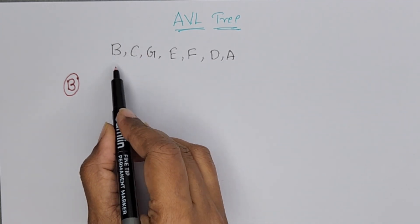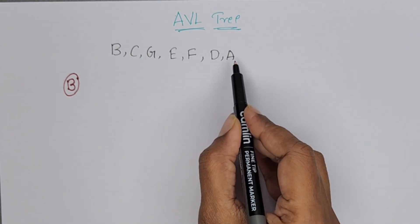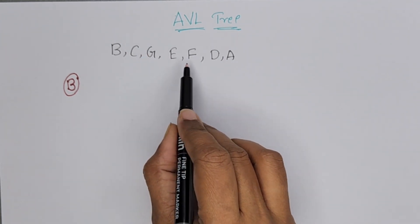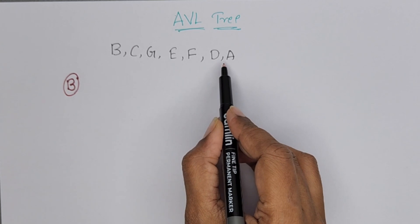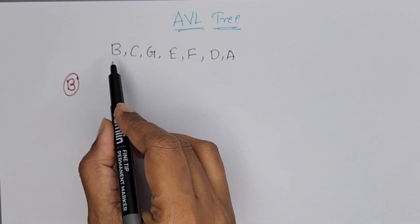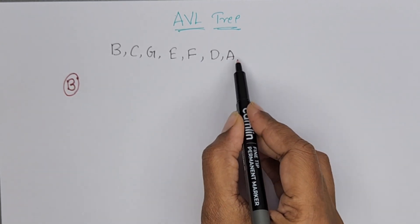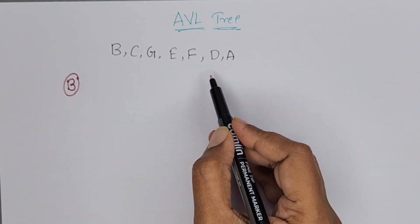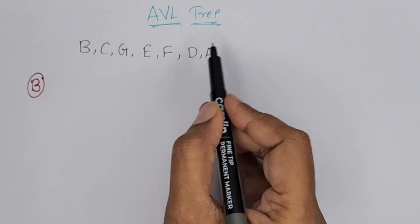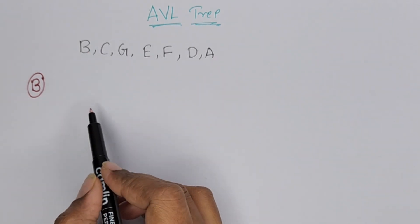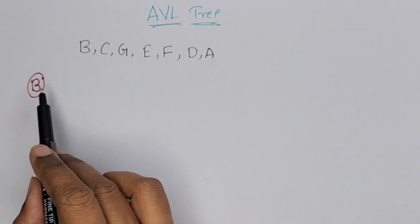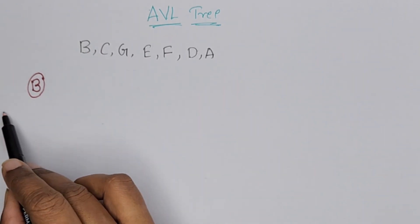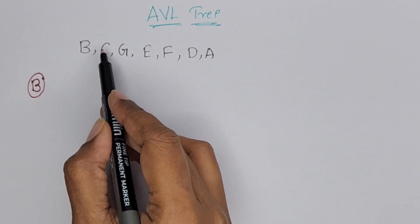C is greater than B. A is smaller than all the remaining characters. B is greater than A and smaller than remaining characters. AVL tree is a binary search tree. If it is greater, right side we have to insert, otherwise left side. C is greater than B, so right side we have to insert.